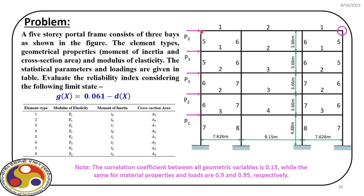On your screen we have a 5-storey free bay portal frame. This frame has different material and geometric properties — each element of the frame has a number, and corresponding to this number the properties are also defined. We have elastic modulus E1 and E2, and there are different cross sections and moment of inertia, all listed in this table. Each element has different combinations of material and geometric properties.